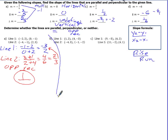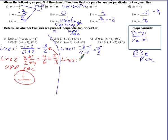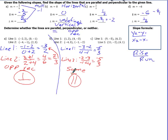For the next set, line one is negative three minus two divided by four minus one, which simplifies to negative five over three. Line two is negative two minus three divided by negative one minus negative four, which gives negative five over three. Since both slopes are the same — negative five-thirds — these lines are parallel.